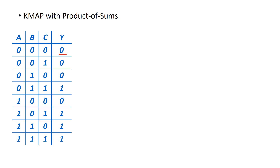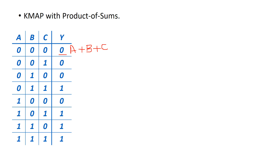We look at an output of 0 and say Y is equal to 0 when A is equal to 0, B is equal to 0, C is equal to 0, and we write this as an OR of these variables. In the case of minterms for sum of products, when we identify a 1, we write it as NOT A AND B AND C. Whenever there was a 0, we wrote the variable with a bar over it; wherever there was a 1, we simply wrote the variable, and we AND them.